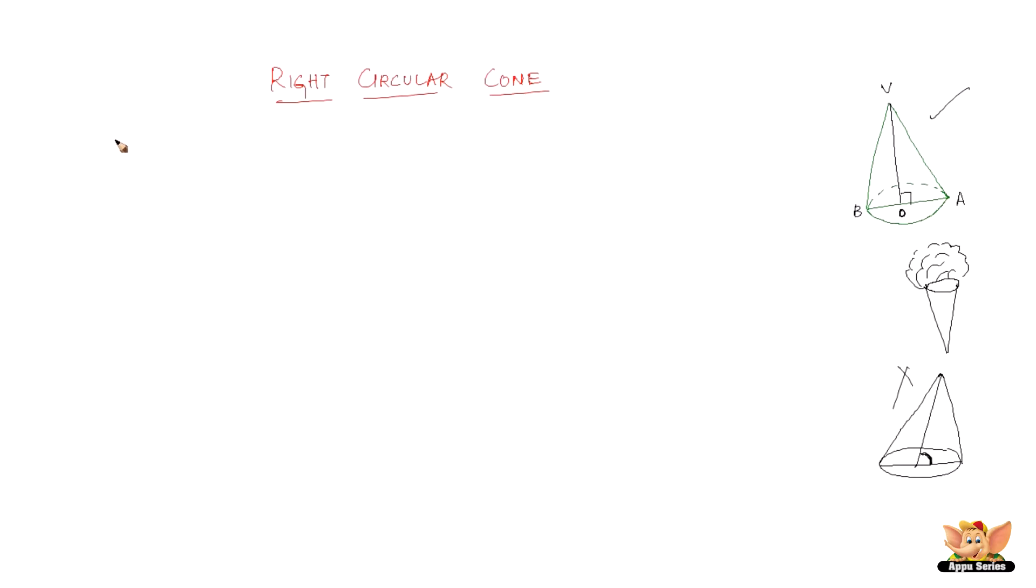Now let us quickly learn some of the terms related to the right circular cone. The first term that we are going to learn is the vertex. The fixed point V here is called the vertex of the cone.